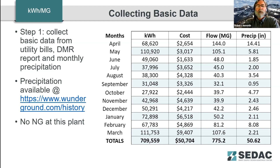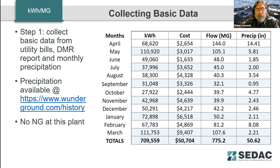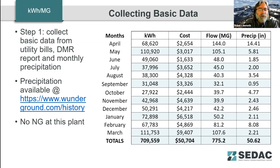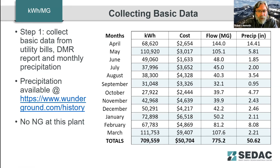This is some of the first information that we try to collect from wastewater treatment plants before we even go on site — to give us a feel for how the plant is potentially operating. We try to get the utility data, the kilowatt hours for each month. Flow comes right off your DMR data, and precipitation data we download offline. You can download it month by month at the Wonder Underground site. After you have your database built, it's just a once-a-month venture to get the current precipitation.